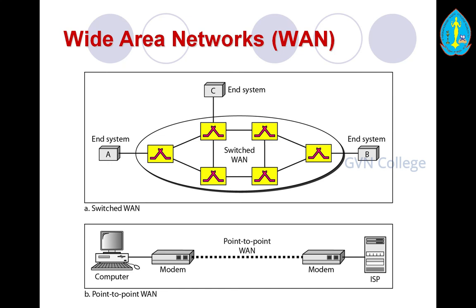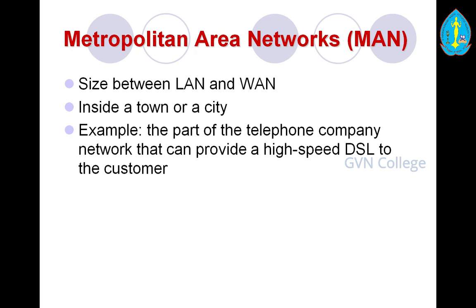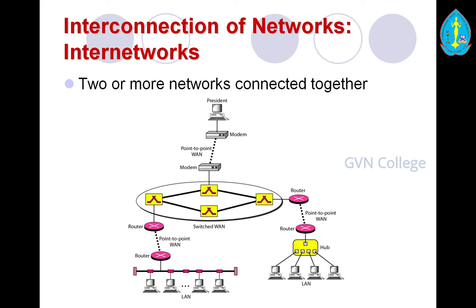A metropolitan area network (MAN) has a size between LAN and WAN, covering the inside of a town or city. An example is the part of a telephone company network that provides high-speed DSL — digital subscriber line — to customers. Two or more networks connected together form an internetwork. A switched WAN can be connected by a LAN in two types, connecting by a switched WAN.